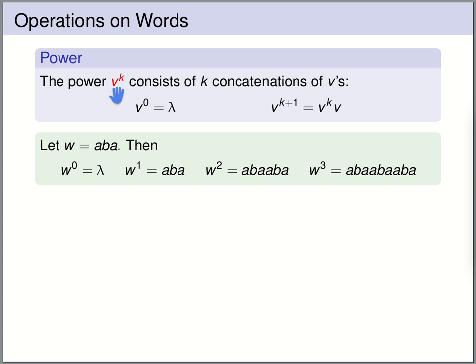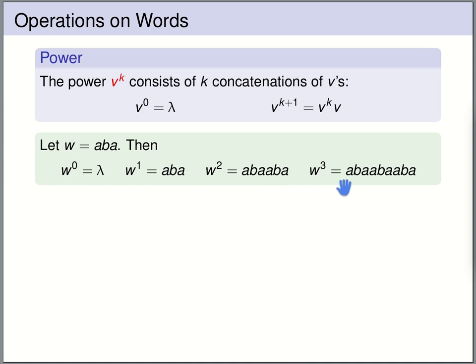The kth power of a word, v to the power k, is v concatenated k times with itself. This can be defined inductively: v to the power 0 is the empty word lambda, and v to the power k+1 is v to the power k concatenated with v. For instance, if w is aba, then w to the power 0 is lambda, w to the power 1 is aba, w to the power 2 is abaaba, and w to the power 3 is aba concatenated three times: abaabaaba.